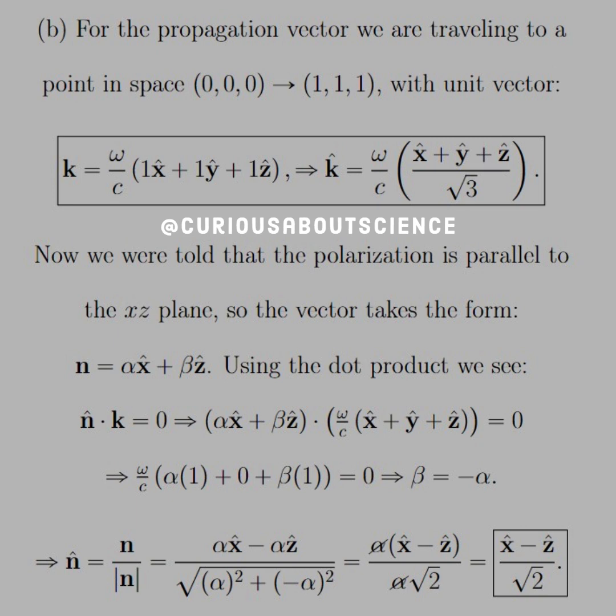So, that's what we have in part B. For the propagation vector, we are traveling to a point in space from the origin to (1,1,1). And, if we do that, we just take the separation vector distance. So, that's one unit in the X, one unit in the Y, one unit in the Z. Hence, we have K, the propagation vector, is equal to omega over C, (1X hat plus 1Y hat plus 1Z hat). So, if we want to find the unit vector, we just take the magnitude of the components. So, that's 1 squared plus 1 squared plus 1 squared, which is equal to square root of 3. Again, the omega over C just kind of stays there with the K regardless, just due to construction and units.